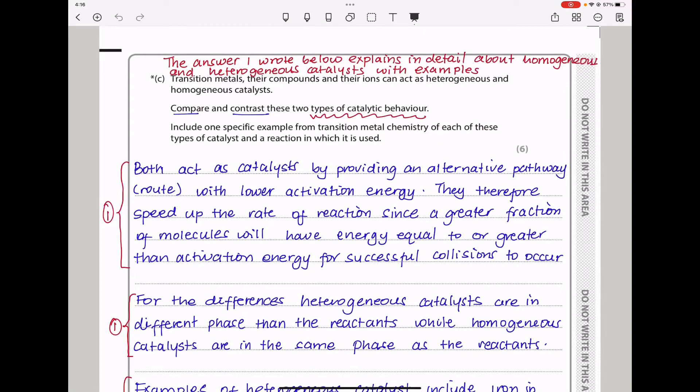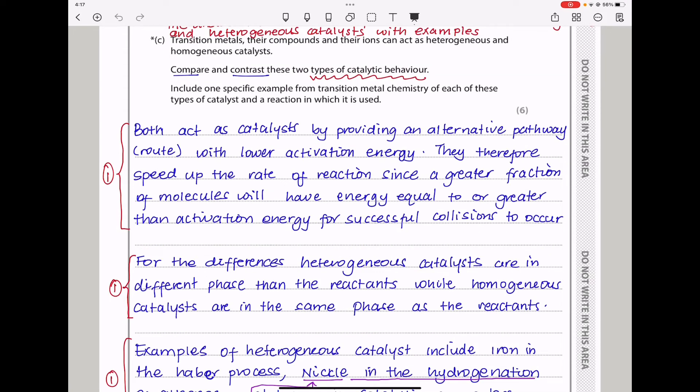Moving on. Here they say, transition metals, their compounds and their ions can act as heterogeneous and homogeneous catalysts. Compare and contrast these two types of catalytic behavior. Every time they give you a question about compare and contrast, you have to write the similarities as well as the differences. So, I began with the similarities.